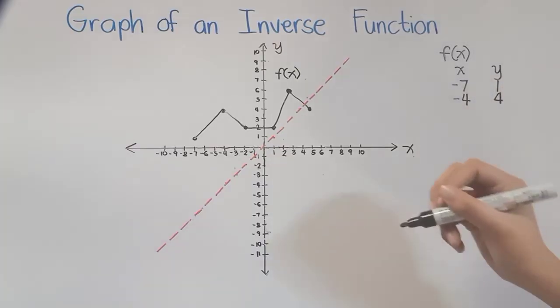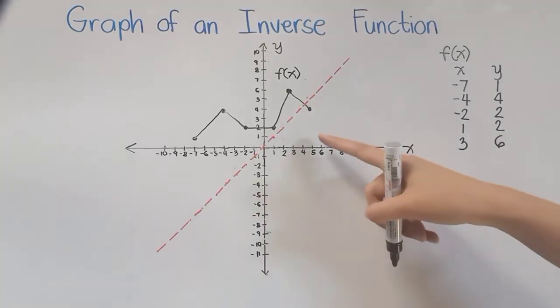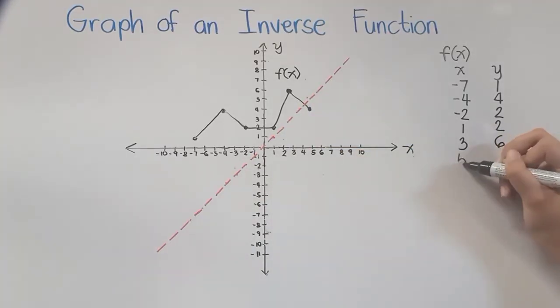And then this point is negative 2, positive 2. We also have here positive 1, positive 2; and positive 3, positive 6. And lastly, we have positive 5, positive 4.